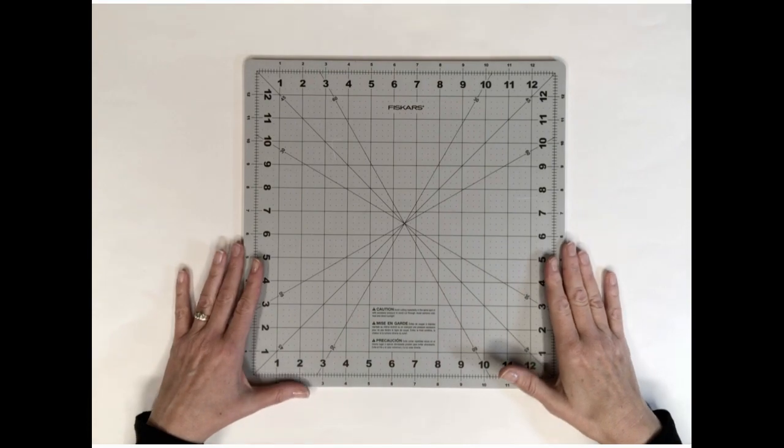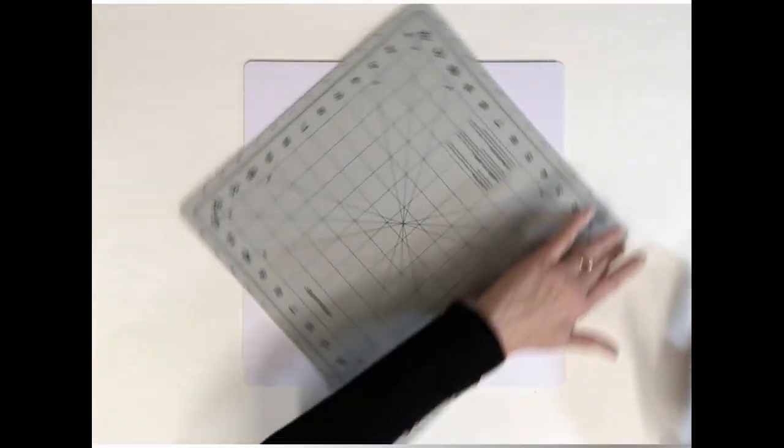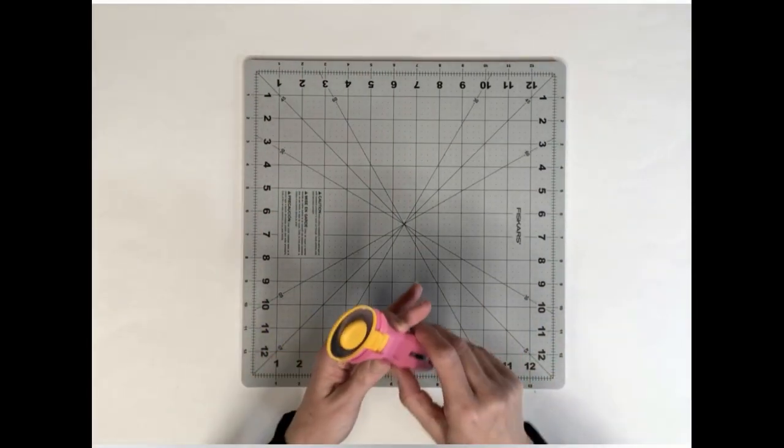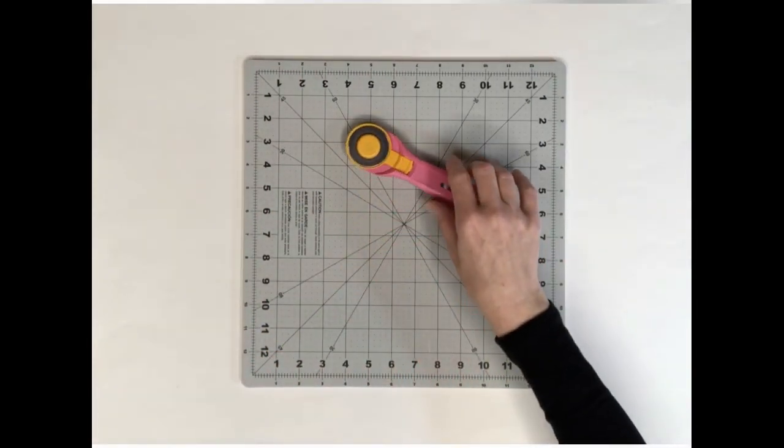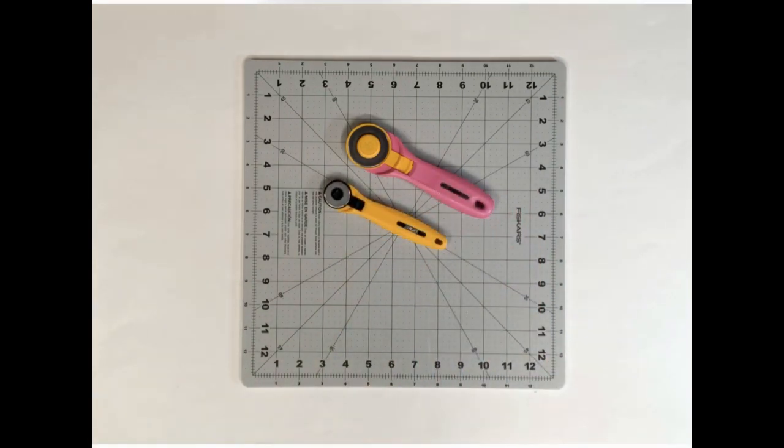Among the supplies I suggest is a rotating cutting mat. This makes using the acrylic templates so much easier. Because of the irregular shapes of bag pieces, smaller rotary cutters are helpful. I will be using a 45 millimeter and a 28 millimeter rotary cutter.